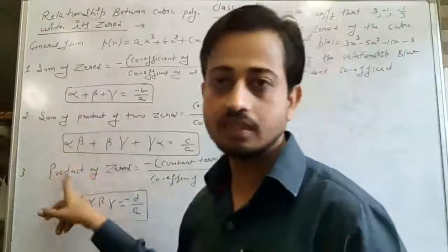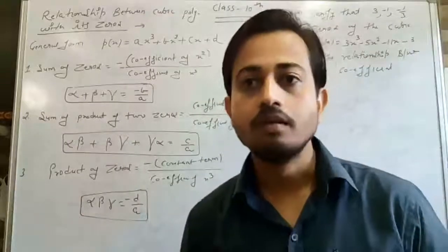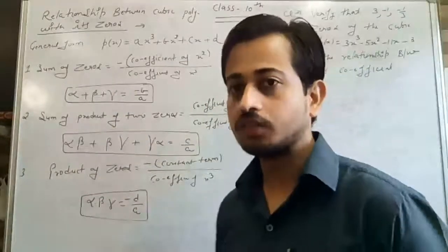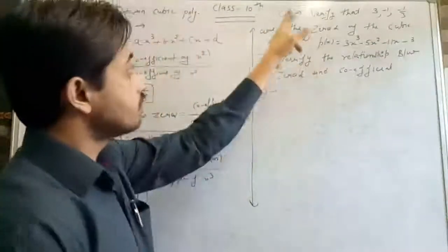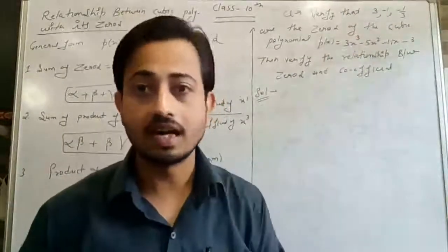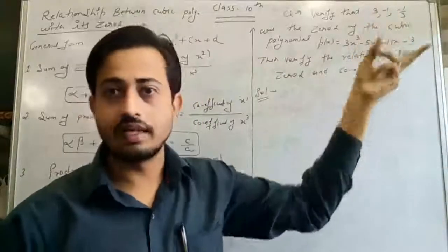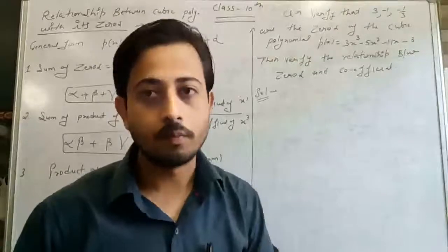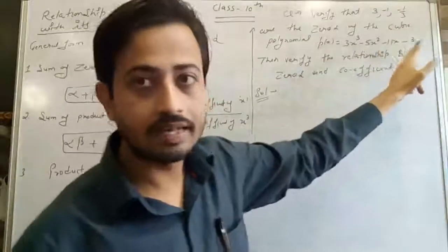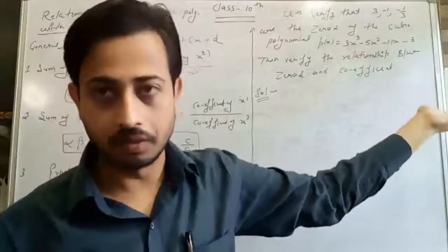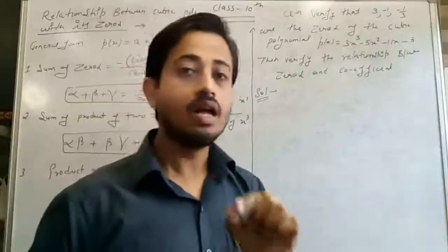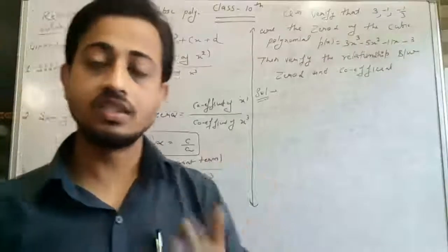You have to learn these three relations to solve any type of question based on cubic polynomial. Now our first problem: verify that 3, -1, and -1/3 are the zeros of the polynomial P(X) = 3X³ - 5X² - 11X - 3. The highest power of X is 3, so this is a cubic polynomial with 3 zeros. To verify, we substitute each value into the polynomial — if the result is 0, then it is a zero.